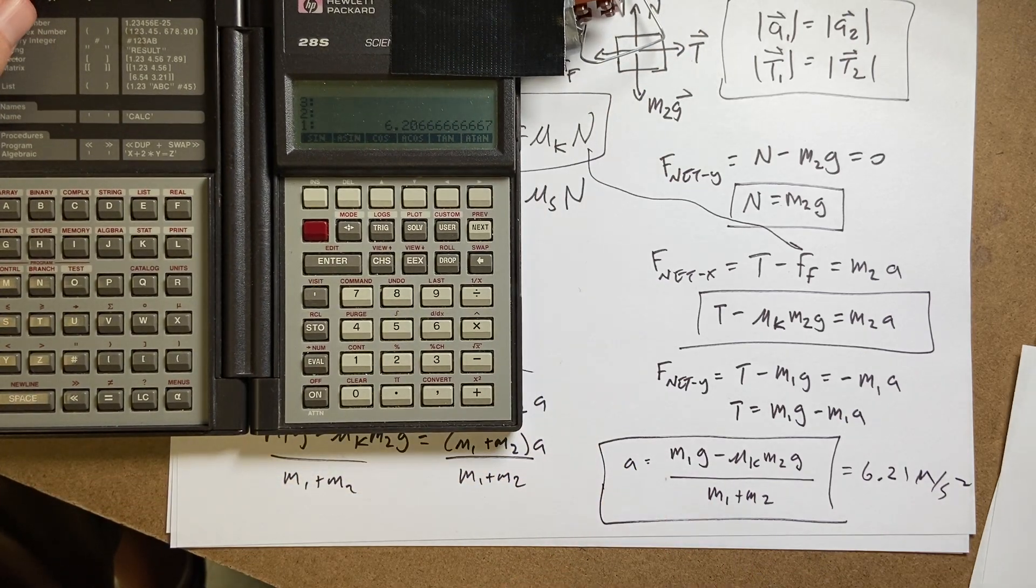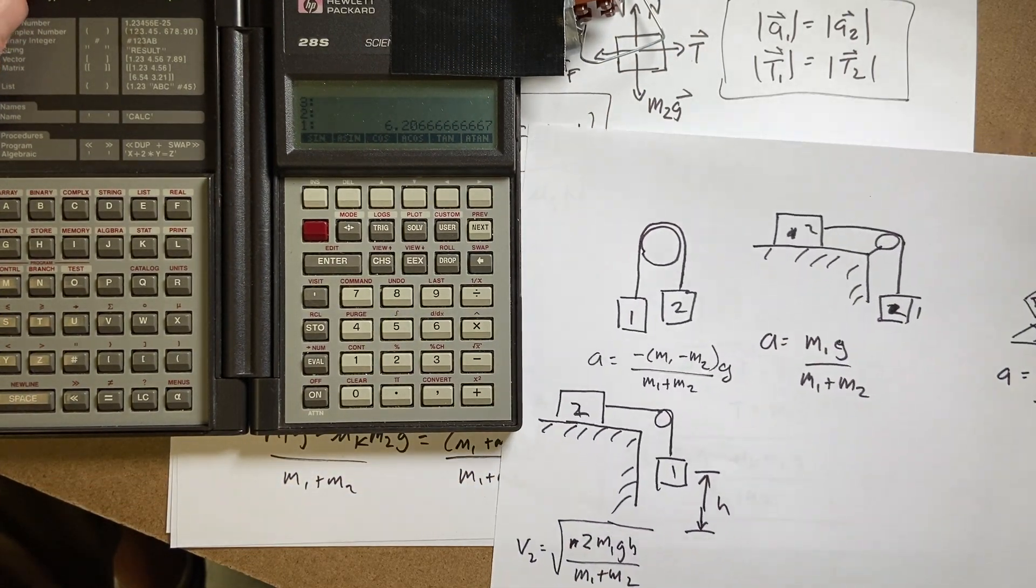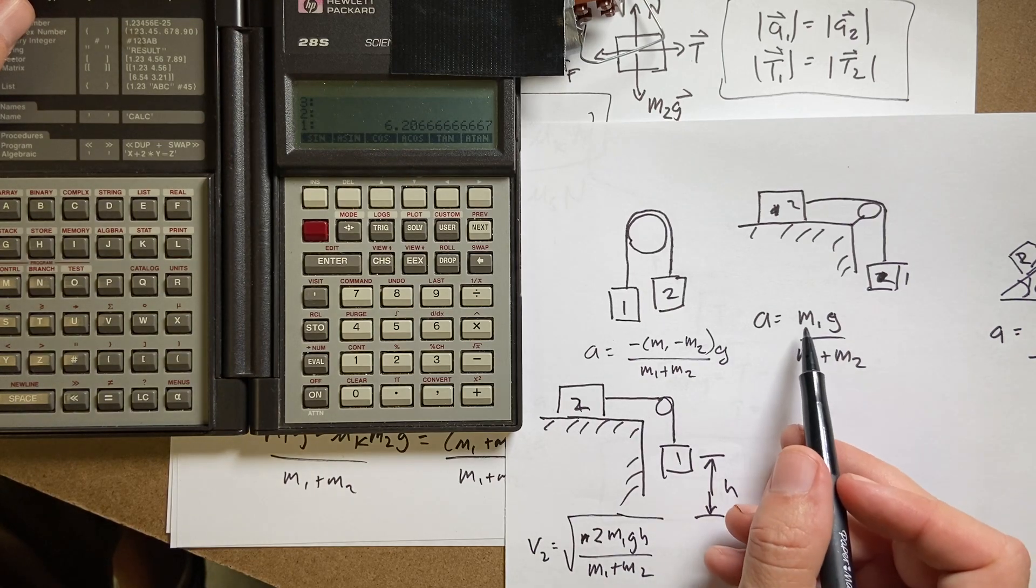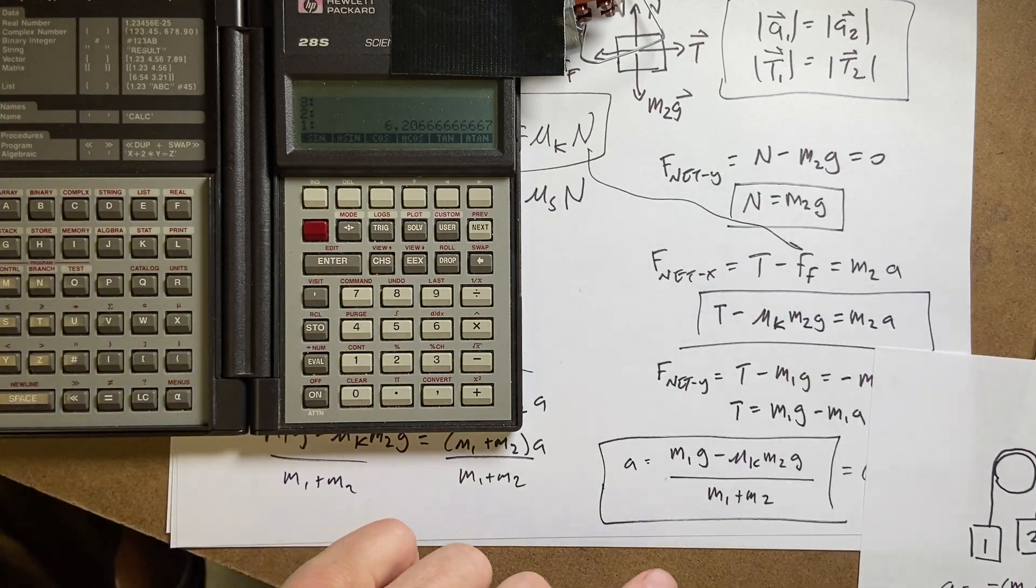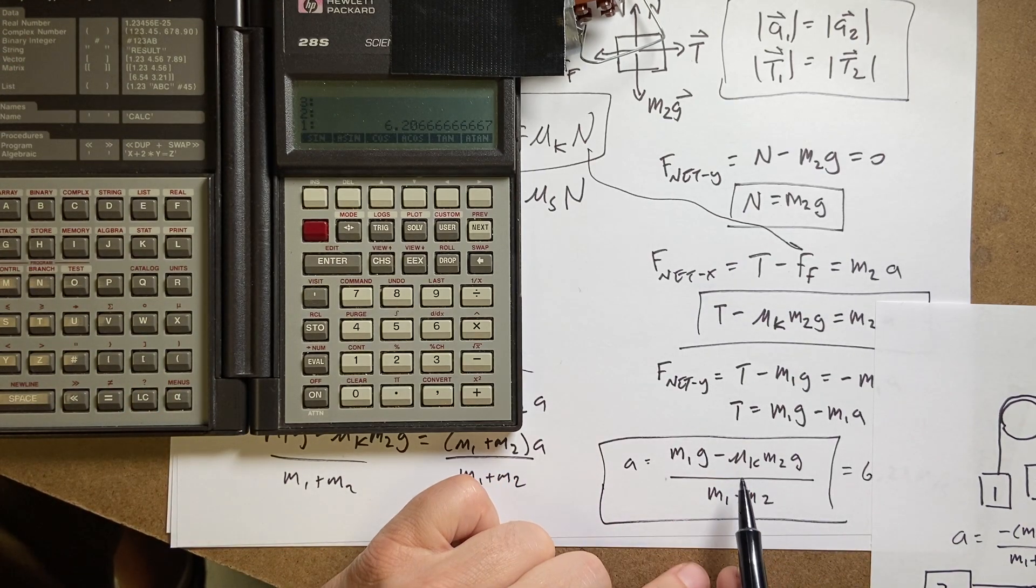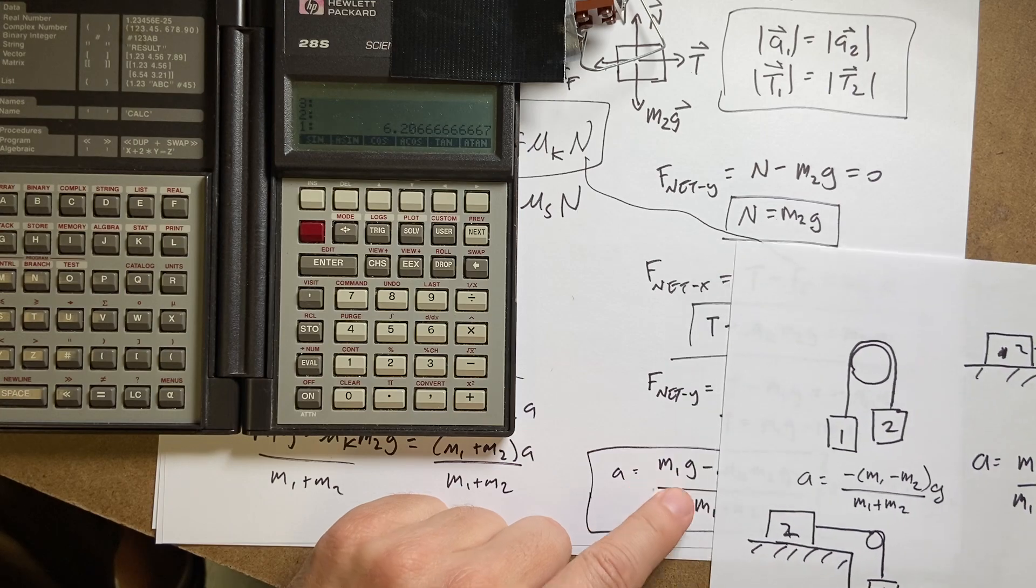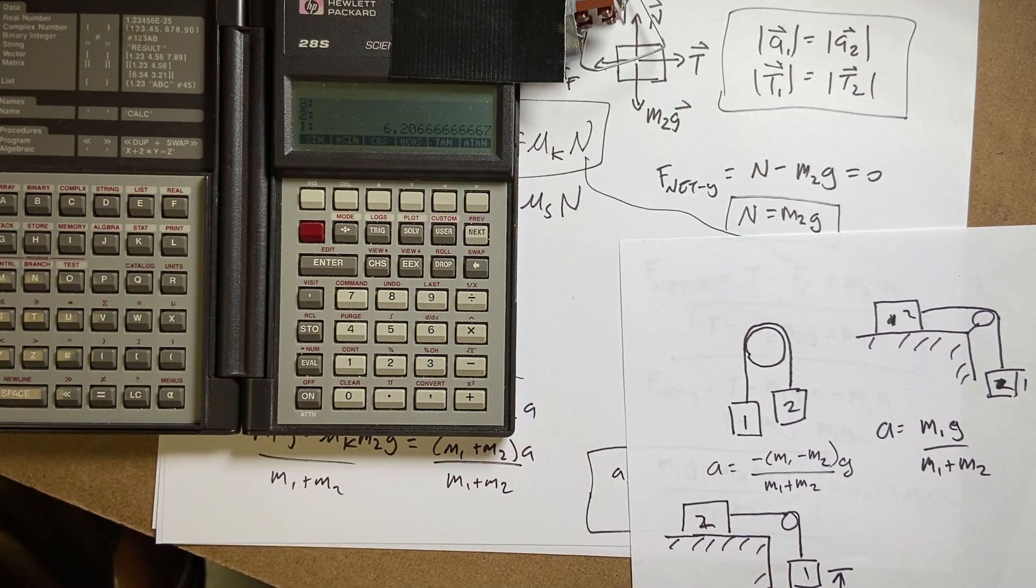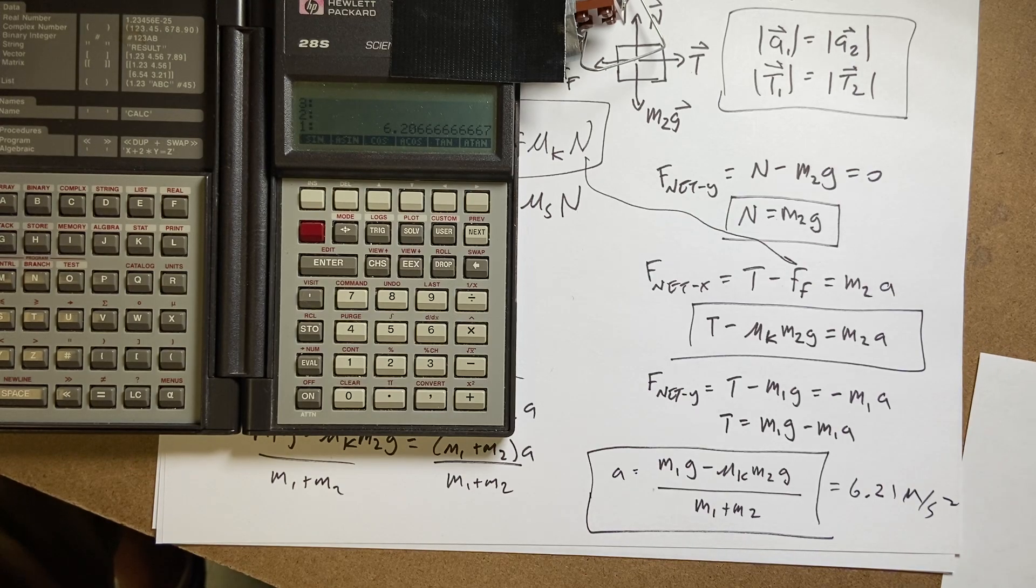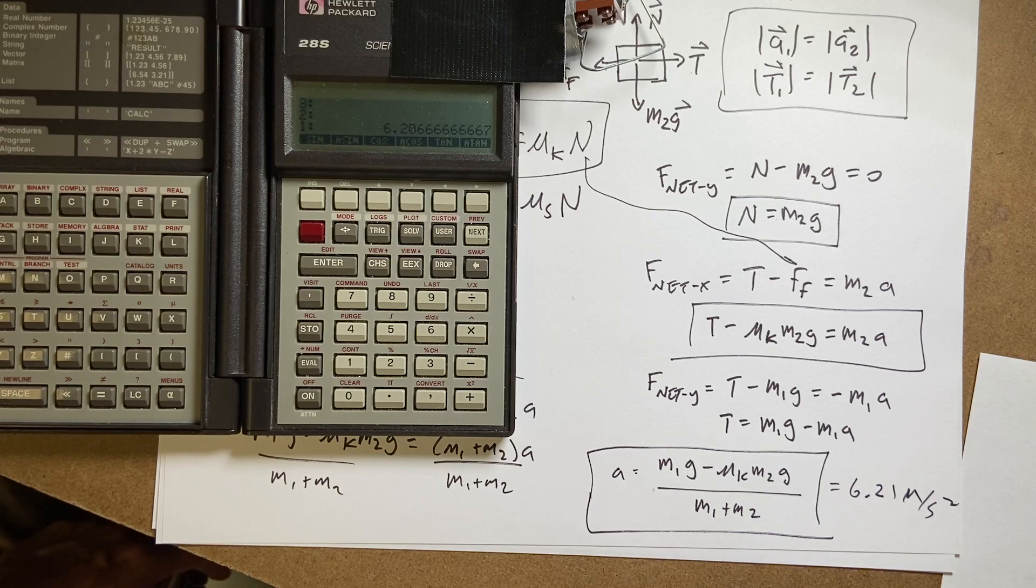Let's compare that to the value for no friction. If mu_K is 0, I have no friction. It becomes the same equation. This is clearly going to be a lower acceleration than with no friction. So that's good. And I think it's working. And I think we're all done.